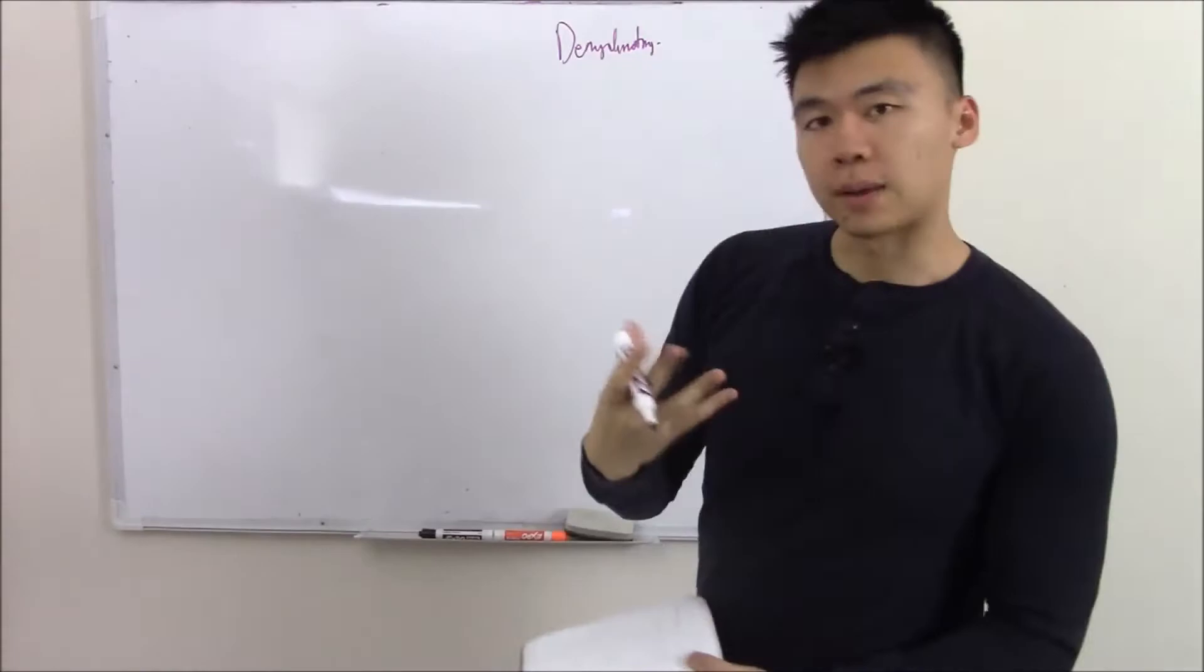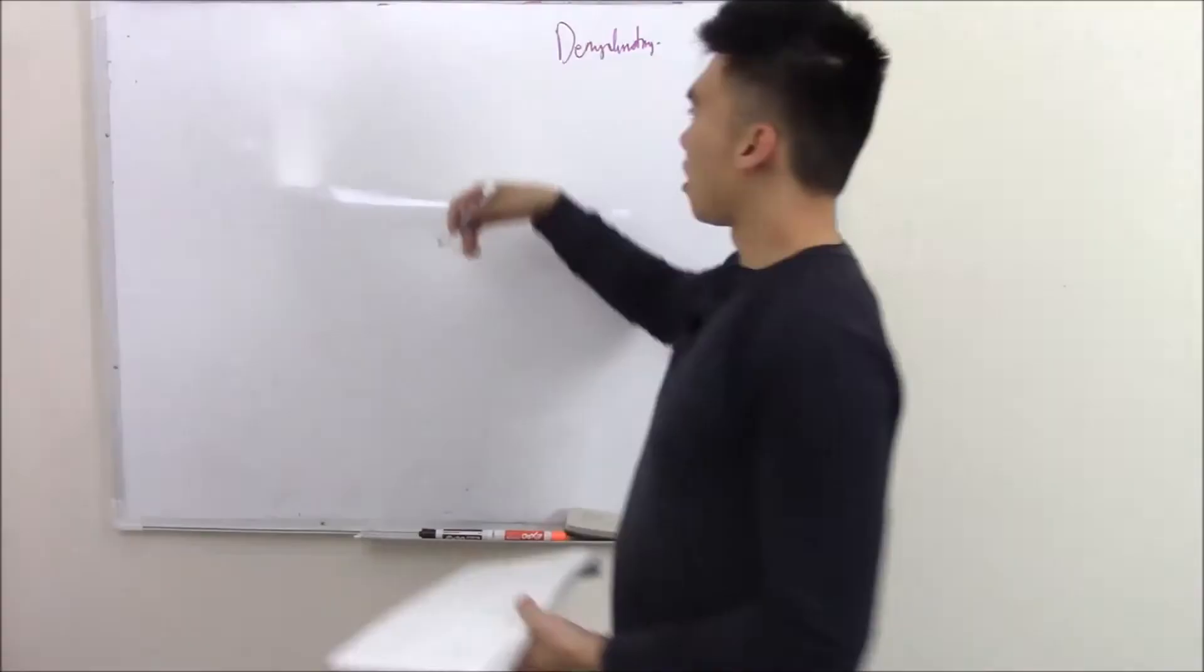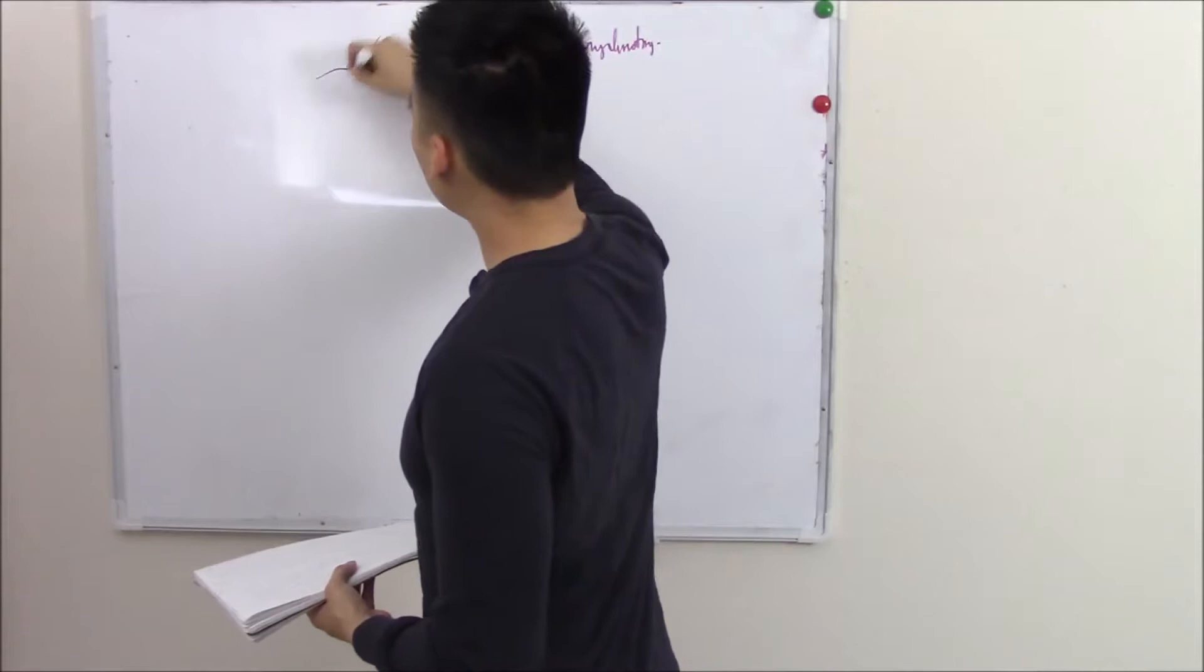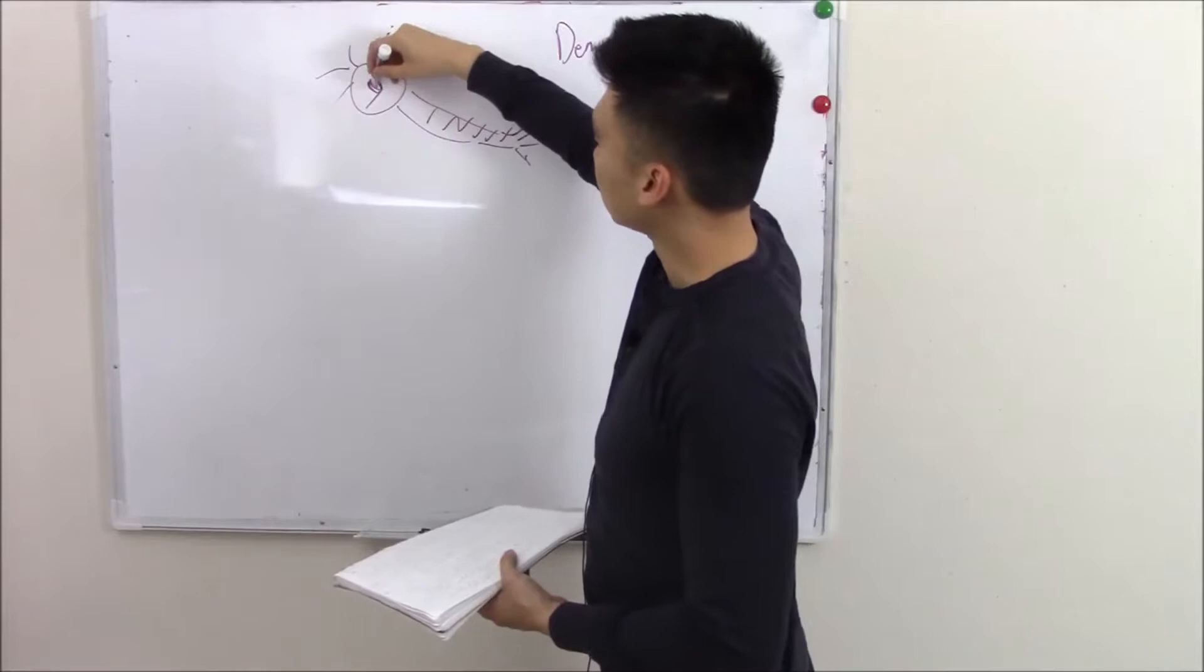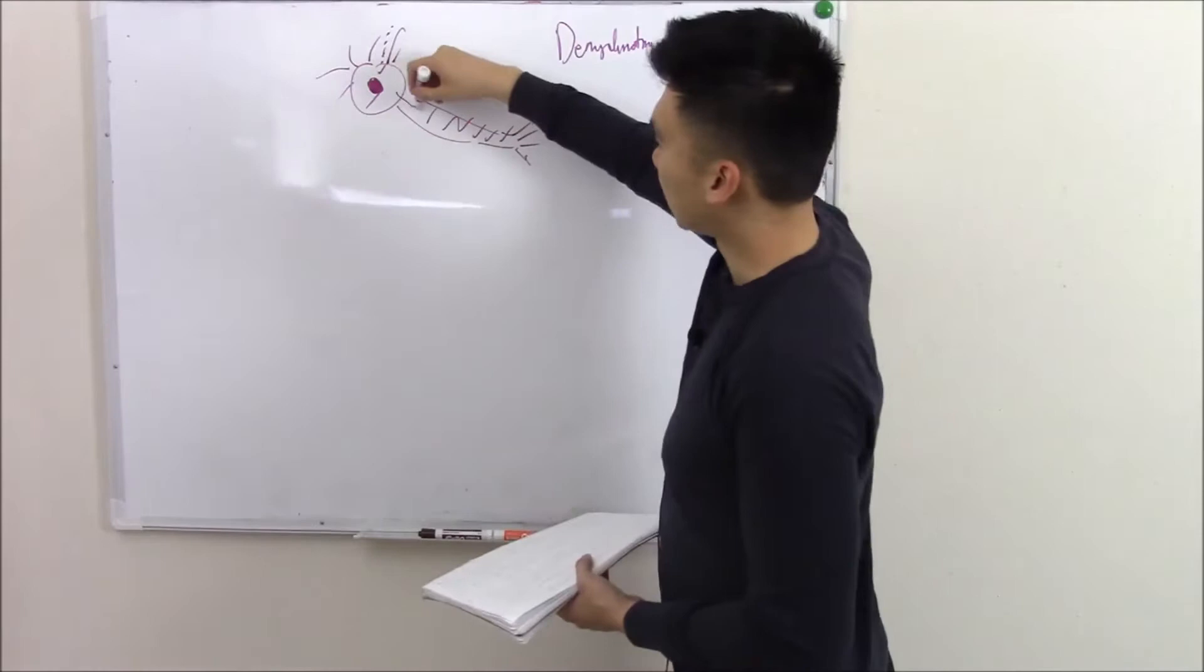Just a recap of anatomy: our functional unit of the nervous system is your neurons. Neurons look kind of like this—you have projections called dendrites that receive information, process it in your cell body and nucleus, and then transmit that signal down the axon and out your axon terminal.